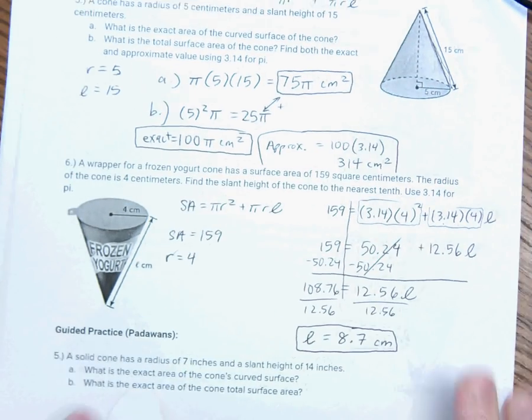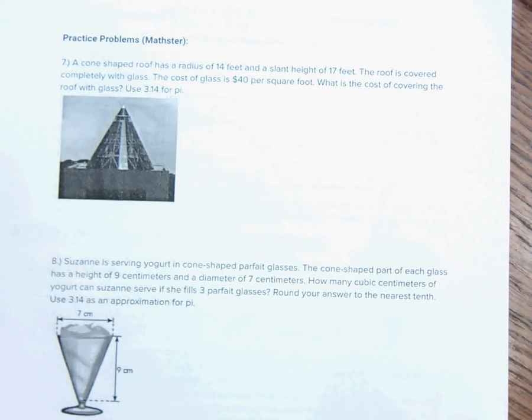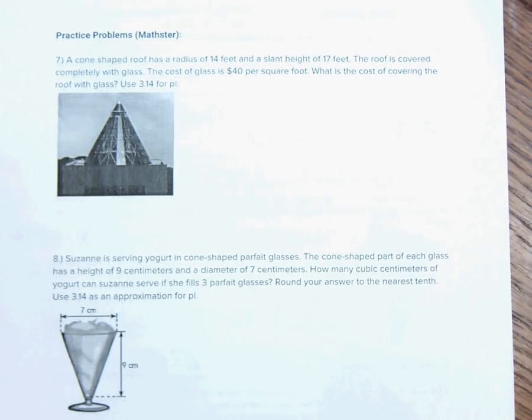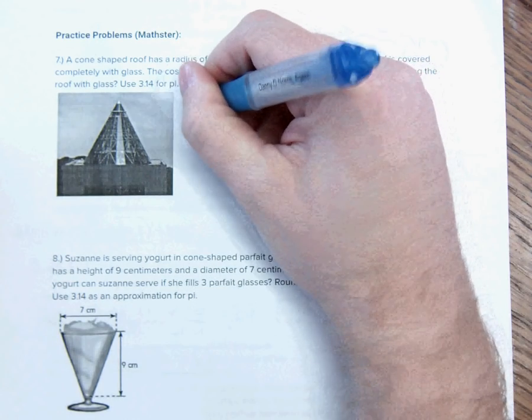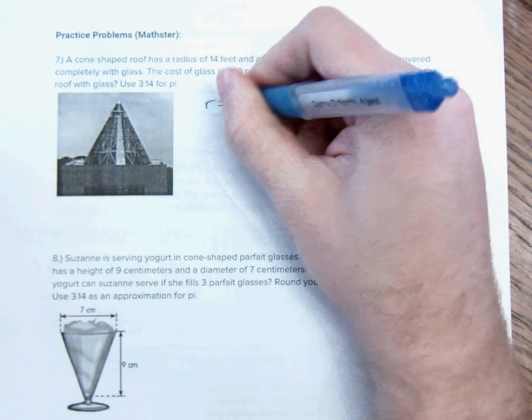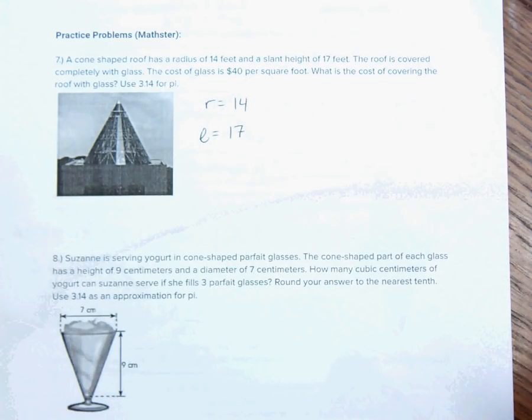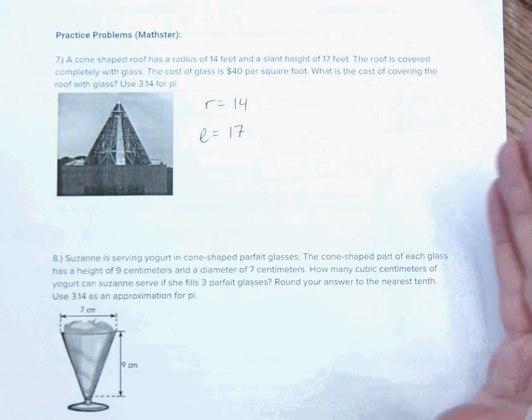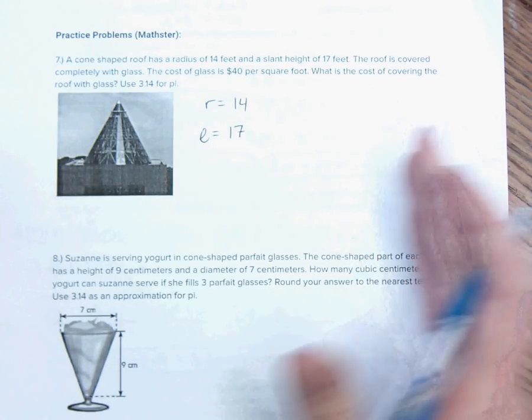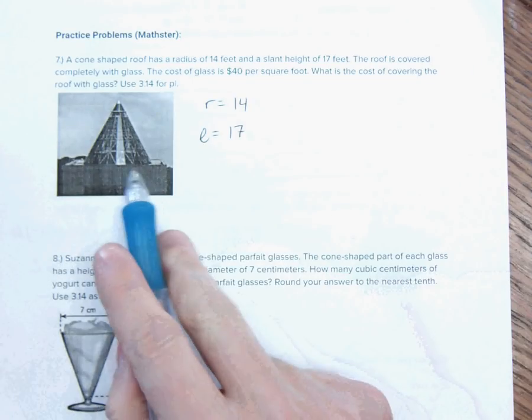Padawans can do this one, and that one. And I actually have two more questions that I'm going to go through now. There's no more Padawan questions, but I just want you to get an idea of just a couple more examples. So, a cone-shaped roof has a radius of 14 feet and a slant height of 17 feet. The roof is covered completely with glass. The cost of glass is $40 per square foot. What is the cost of covering the roof with glass? So, I want to think about it. Here's a picture of the roof.